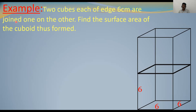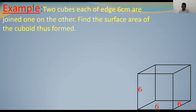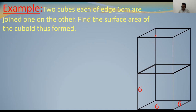Now I join another cube on top. Two cubes joined one on the other — one cube is placed on top of the other cube, not to the side. When it is joined like this, the height of the diagram is increased. This is height 6 and 6 more height is added. Length is not increased, breadth also is not increased — but height is increased.